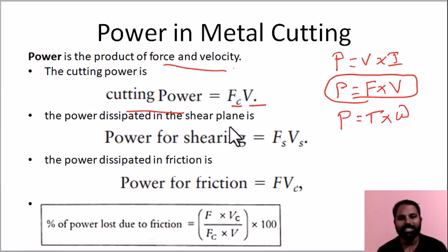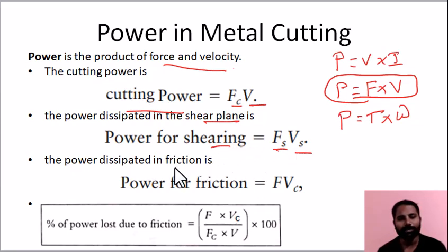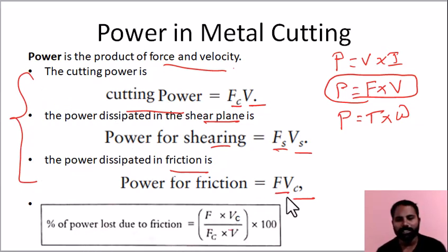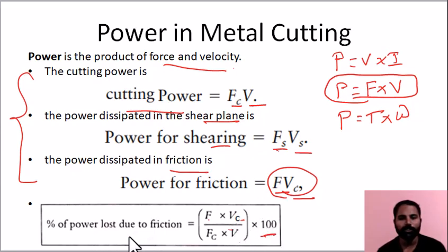Power dissipated in the shear plane — shear power equals shear force into shear velocity. Power dissipated in friction equals frictional force into chip flow velocity, F into Vc. This represents the percentage of power loss due to friction.